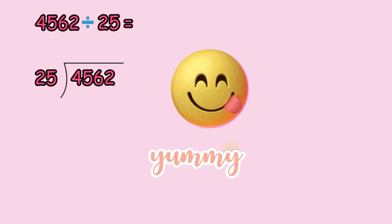There we go. 4562 divided by 25. To begin dividing, we have to know that this number is the dividend, and the dividend goes under the division bar. This number will be split into 25, and 25 is the divisor. To make it easier, you have 4562 candies and you want to share that amount with your 25 friends. You have a lot of candies. It sounds delicious.